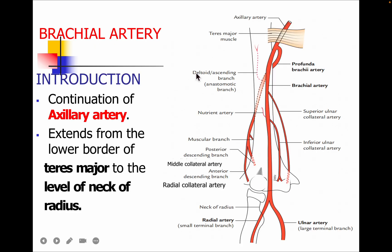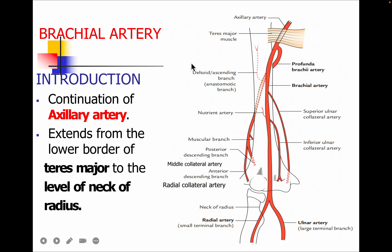One of the main arteries in the arm region is the brachial artery. The subclavian artery continues as the axillary artery, which extends to the lower border of the teres major muscle. From the lower border of teres major to the neck of the radius, it is known as the brachial artery — it is a continuation of the axillary artery. So the extension of the brachial artery is from the lower border of teres major to the neck of the radius.